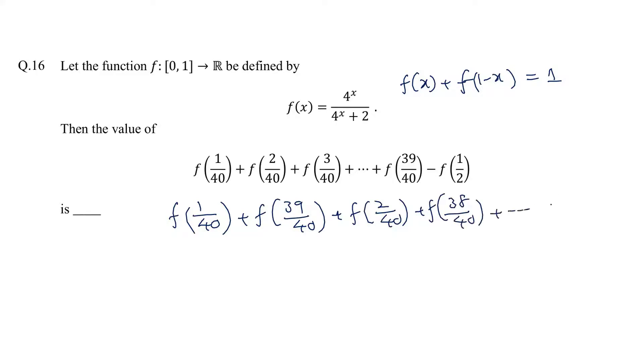We continue clubbing pairs until f(19/40) with f(21/40). There's one more term remaining, which is f(20/40).